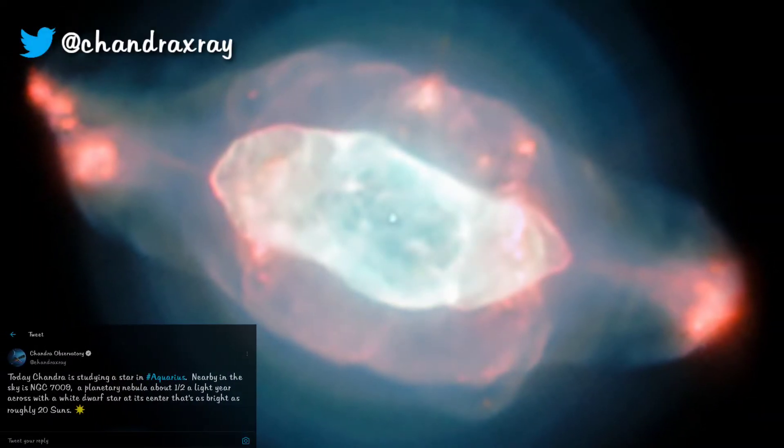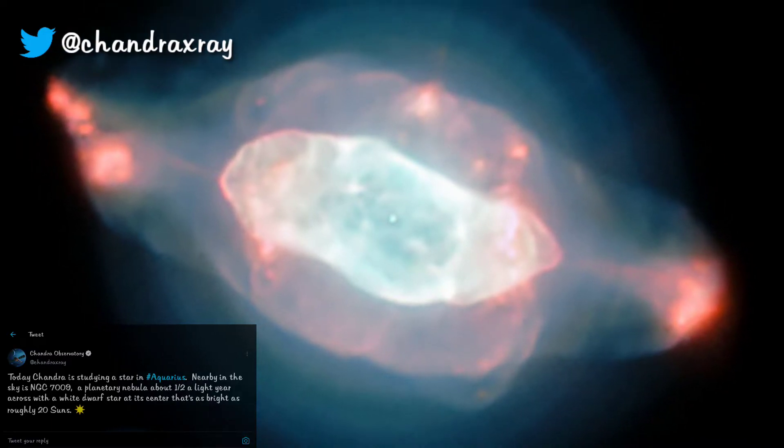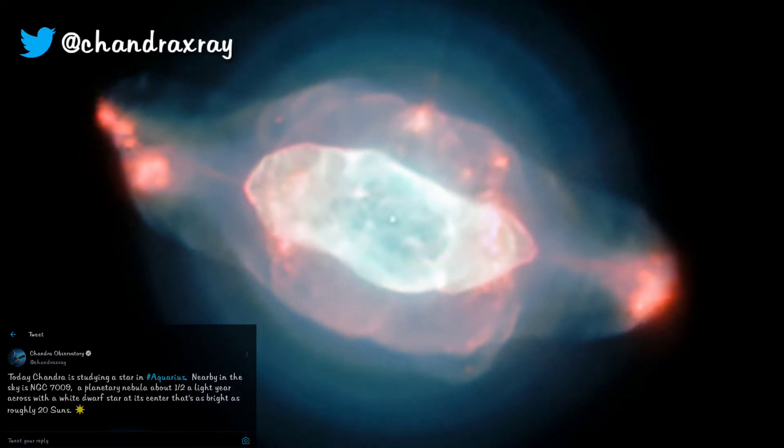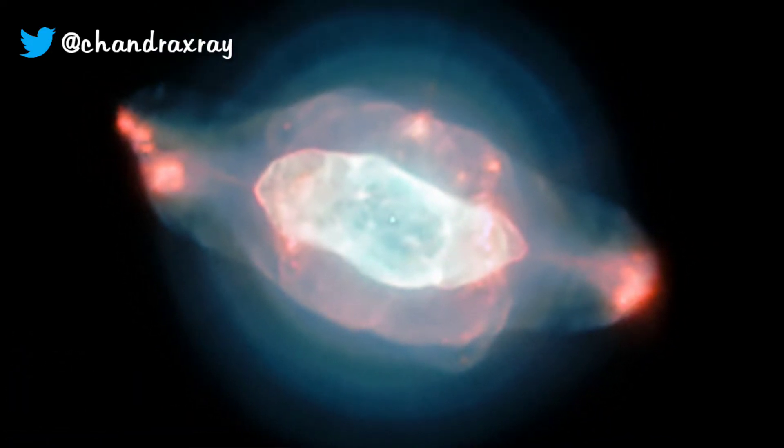As Chandra observes a star in Aquarius, nearby is this planetary nebula, NGC 7009. At about half a light-year across, it hosts a white dwarf shining 20 times as bright as our sun in the center.